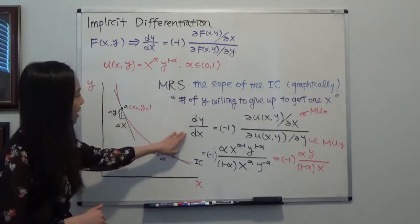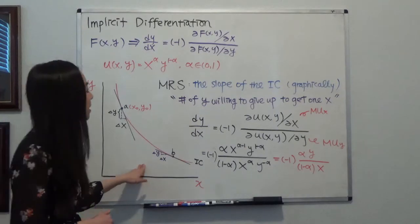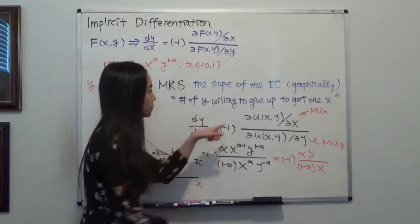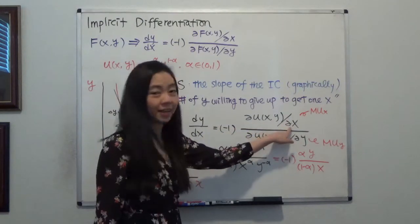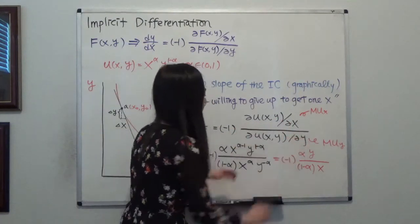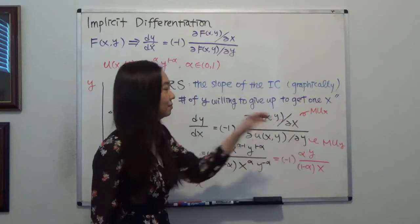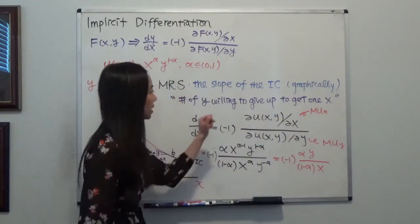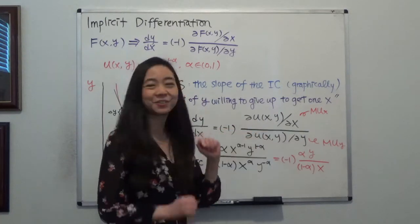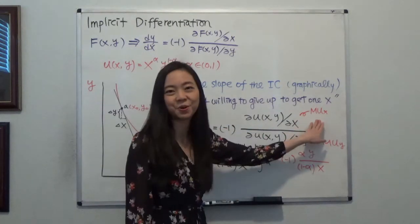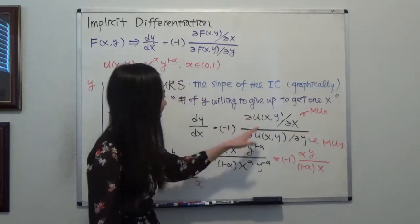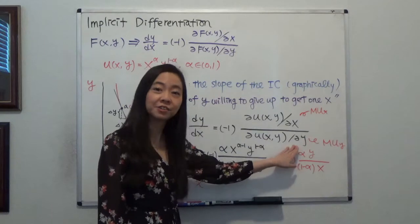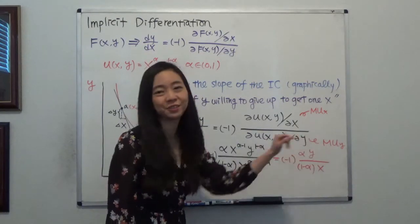So dy/dx, the slope of our indifference curve, is equal to negative 1 times partial u partial x divided by partial u partial y. So you can see, here in the numerator, partial u partial x is actually equal to the marginal utility of x. And in the denominator, partial u partial y is actually equal to the marginal utility of y.